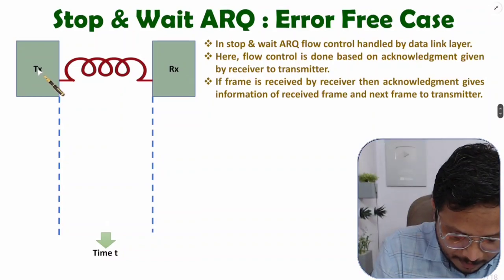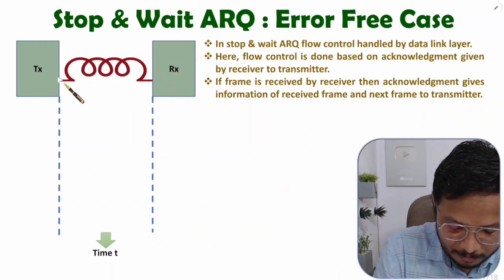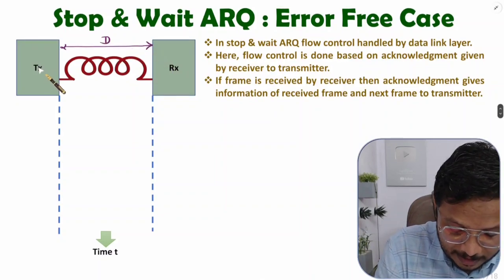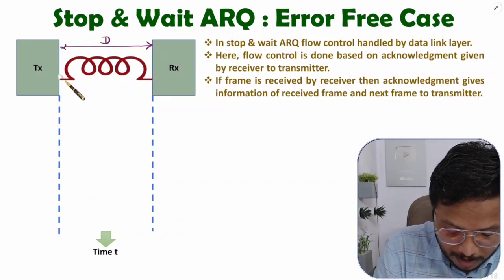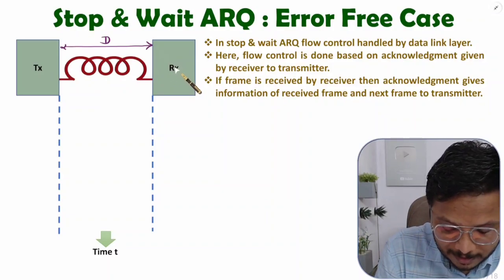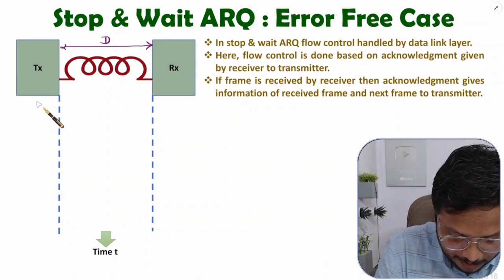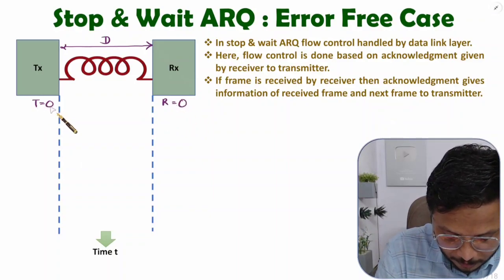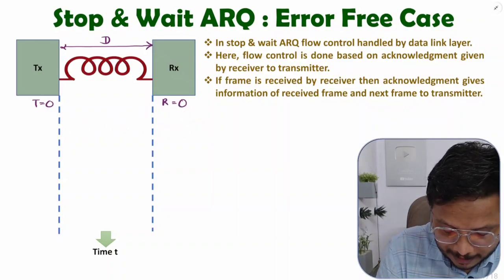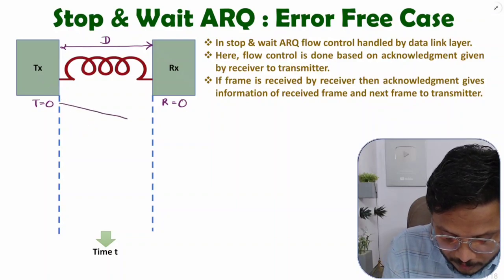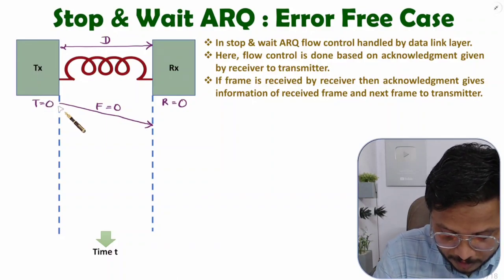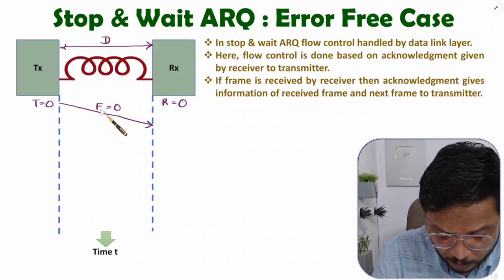Here we have one transmitter and one receiver connected by a medium of length d. The transmitter will send frames to the receiver one by one. The transmitter starts with variable t=0 and the receiver starts with variable r=0, meaning the transmitter will send frame number zero and the receiver is waiting for frame number zero. One frame is forwarded from transmitter to receiver — that is frame number zero.